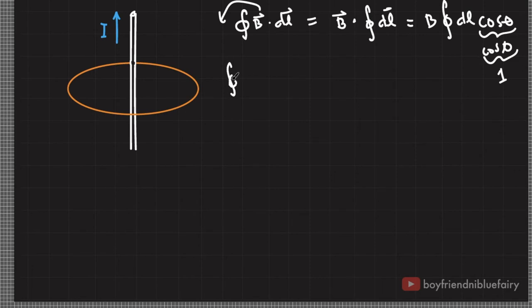So again, let me rewrite it here. B dotted to dL is equal to B integral of dL. And based on the figure, if this integration path has a radius of r from the source, then this integral here is actually equal to B times 2πr.